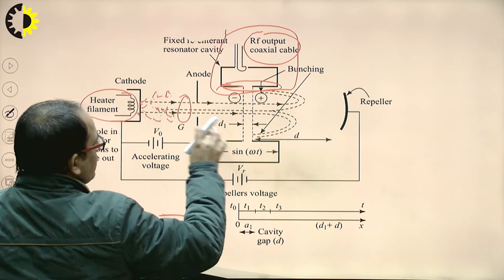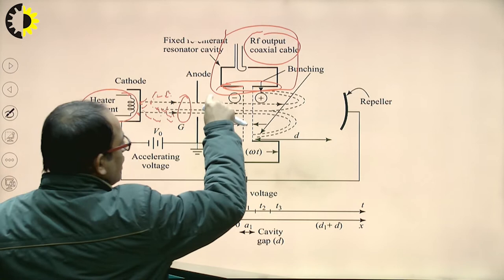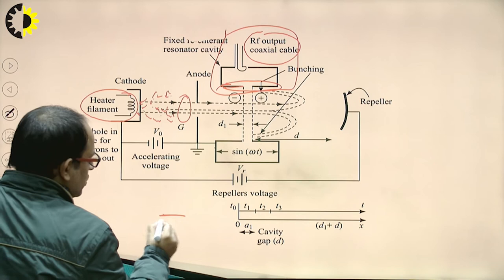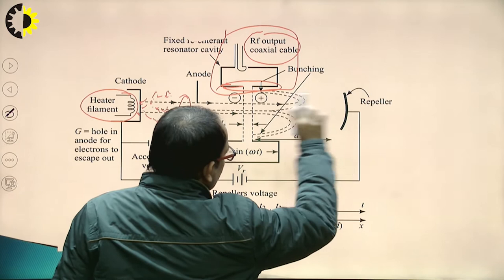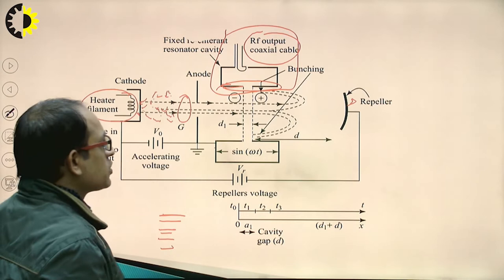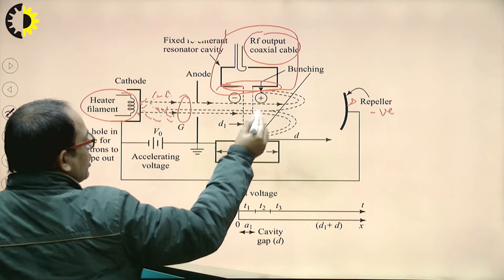Due to the process of velocity modulation — that is, variation in electron velocity — the bunching process occurs and electrons will form a bunch. This bunching occurs at this point, and as the electrons approach the repeller, which is of negative charge, the high-speed electrons approaching the repeller get repelled.